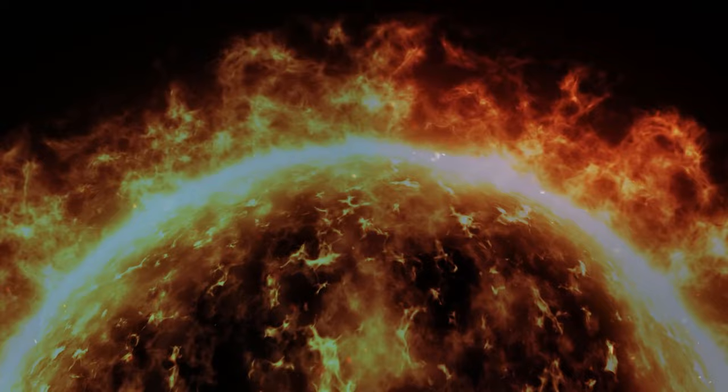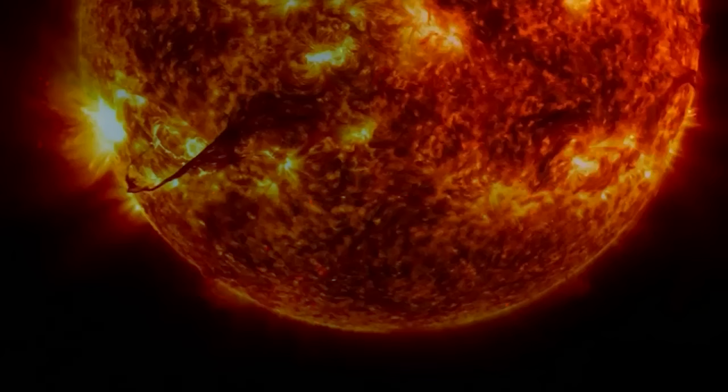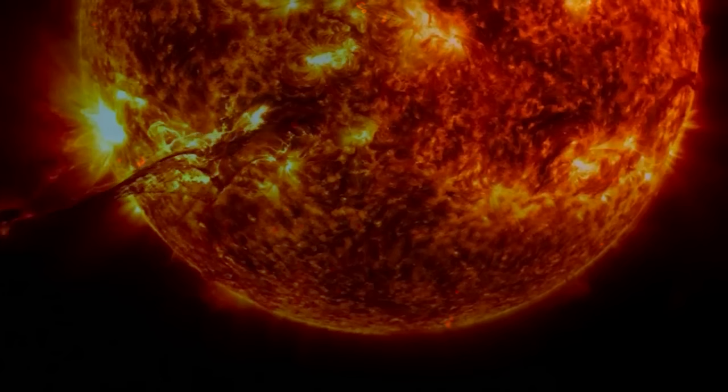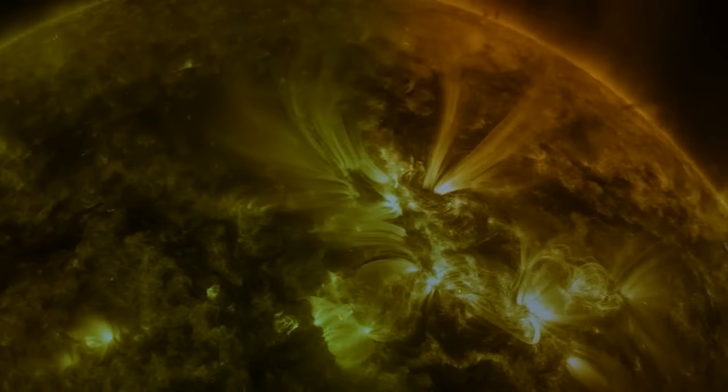For our sun, the pressure comes from fusing hydrogen into helium. When the sun runs out of hydrogen in about 5 billion years, it will become a red giant star whose pressure comes from fusing helium into even heavier nuclei.